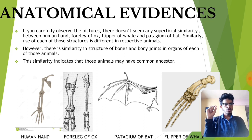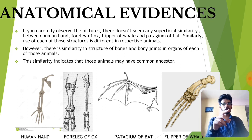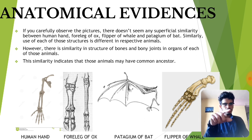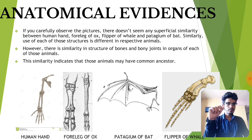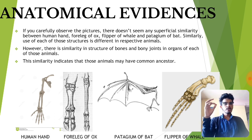Homologous organs are those organs which have a common origin but different functions. For example, a human hand and the foreleg of an ox both have a common origin — their joints occur at the same particular places — but their functions are different. A human hand is used for picking up things and throwing a ball, while the foreleg of an ox is used for walking.